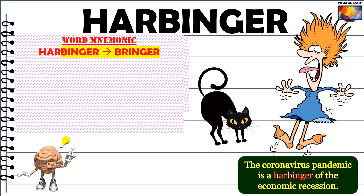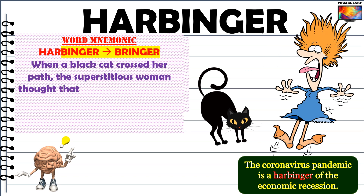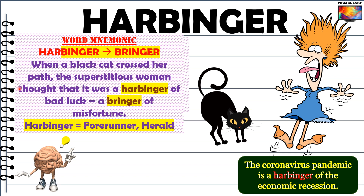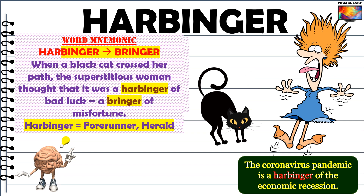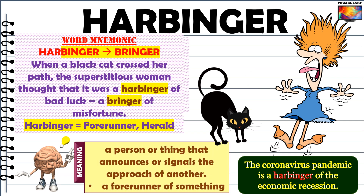Here is another wonderful mnemonic that includes both words — harbinger and bringer: when a black cat crossed her path, the superstitious woman thought that it was a harbinger of bad luck, which means a bringer of misfortune. Two words almost synonymous with harbinger are forerunner and herald. The herald is also, by the way, the name of a newspaper — true to its meaning, it brings you news, sometimes about future events. According to Oxford Dictionary, harbinger means a person or thing that announces or signals the approach of another — a forerunner of something.